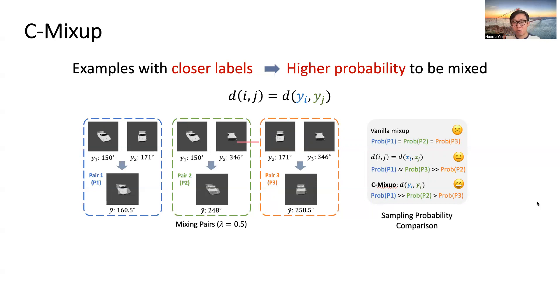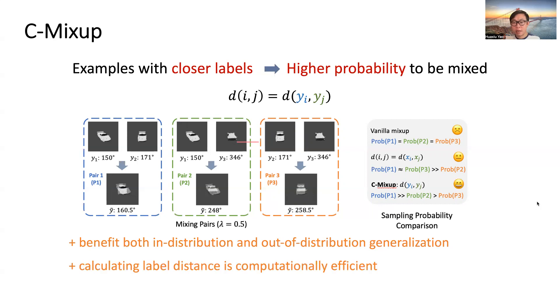Basically, there are two benefits of C-Mixup. First, C-Mixup benefits both in-distribution and out-of-distribution generalization in regression. Second, calculating label distance is computationally efficient compared with other distance metrics.